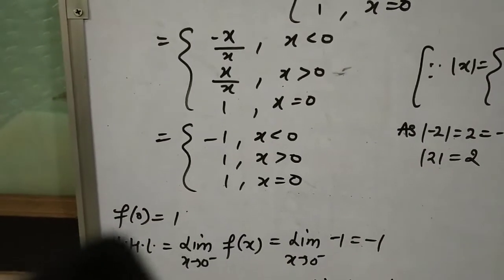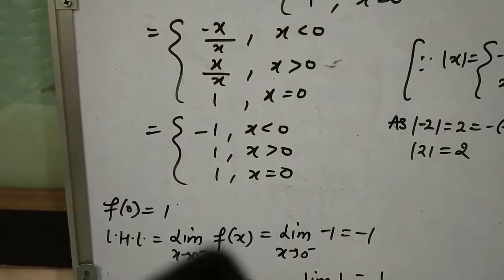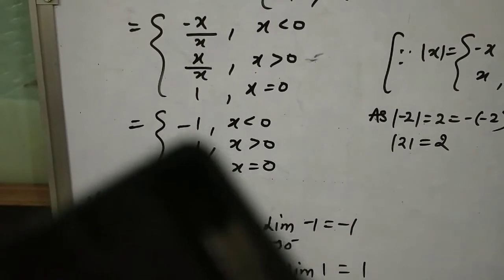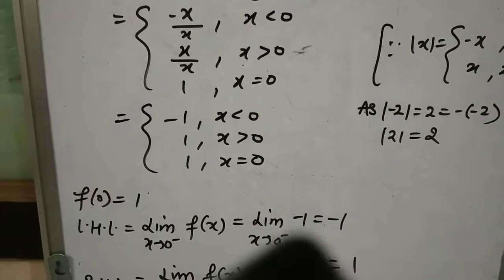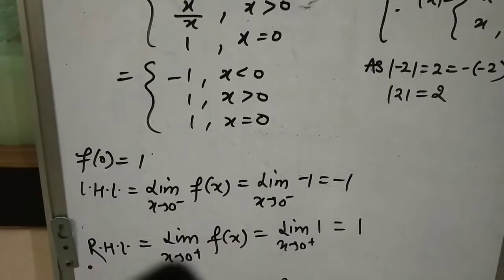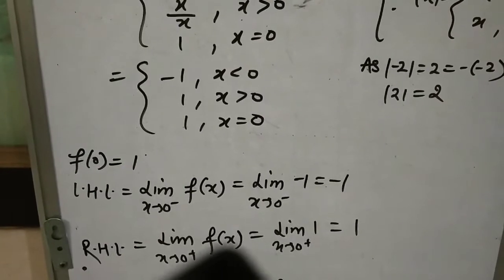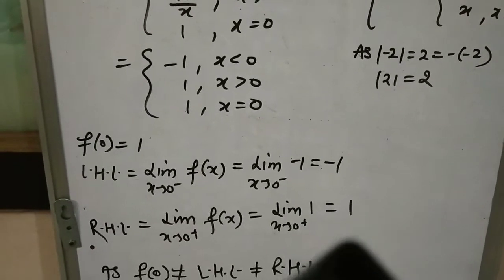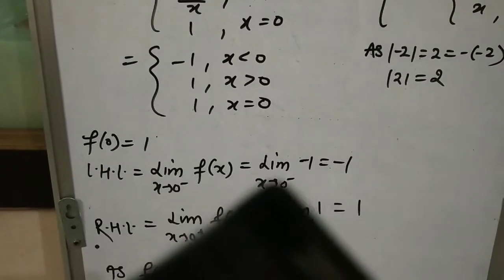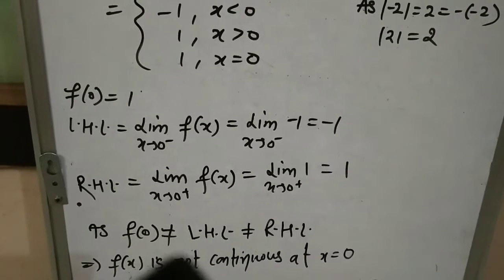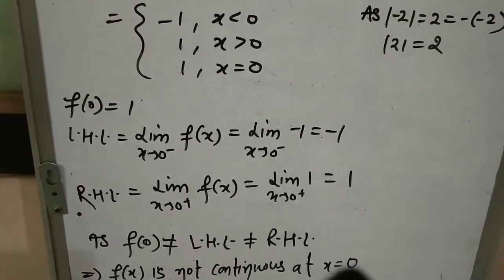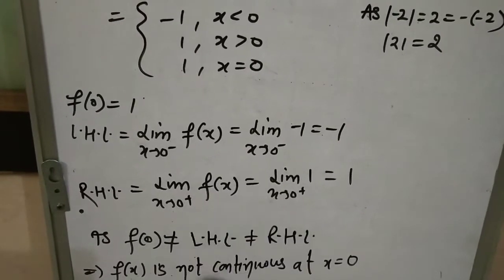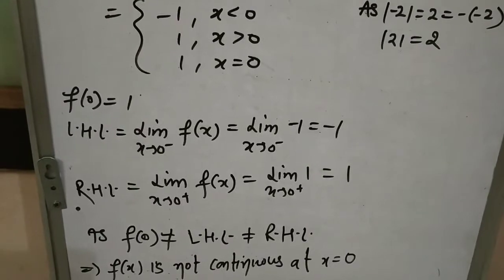f(0) = 1। Left hand limit: limit x→0⁻ f(x) = -1 (क्योंकि x < 0 पर function -1 है, x नहीं है तो limit की need नहीं)। Right hand limit: limit x→0⁺ f(x) = 1। f(0), left hand limit, और right hand limit तीनों equal नहीं हैं। f(0) ≠ LHL = -1 ≠ RHL = 1। So f(x) is not continuous at x = 0।